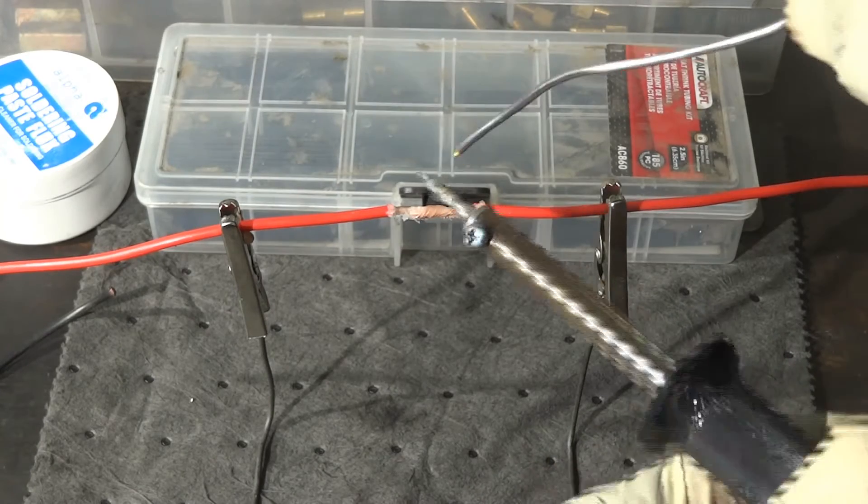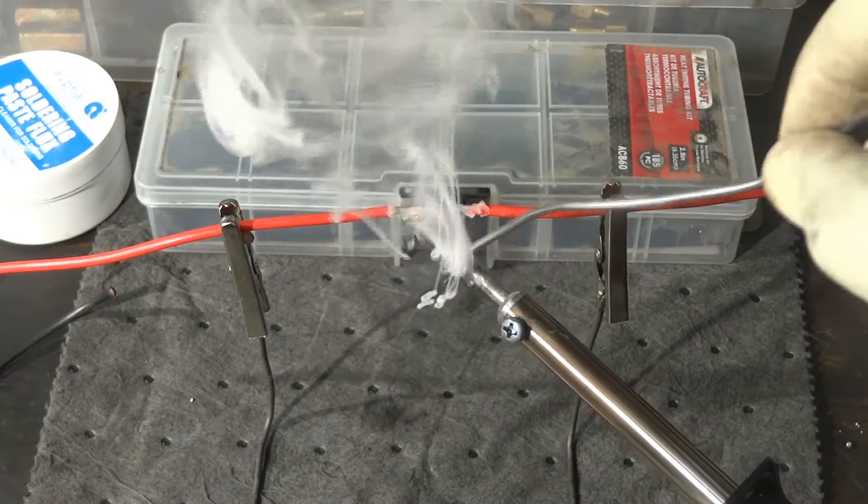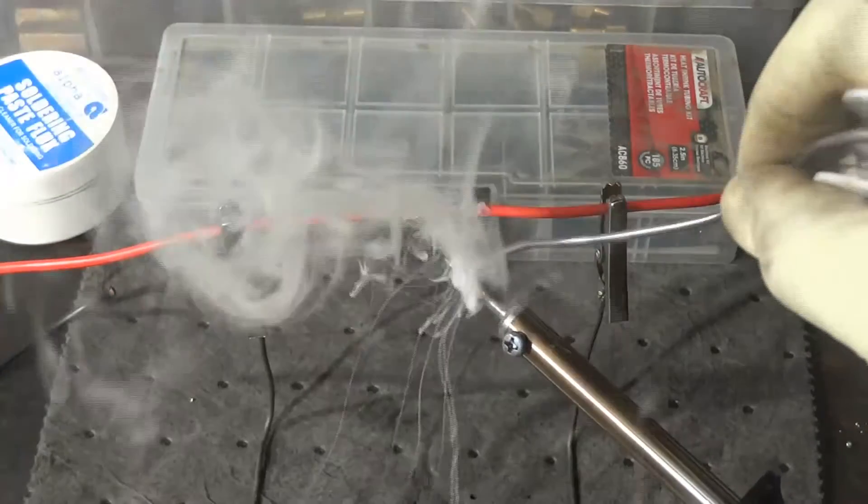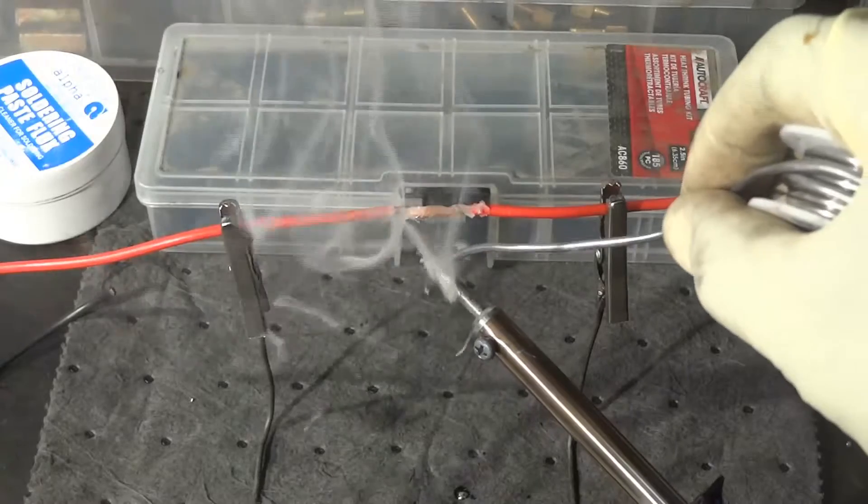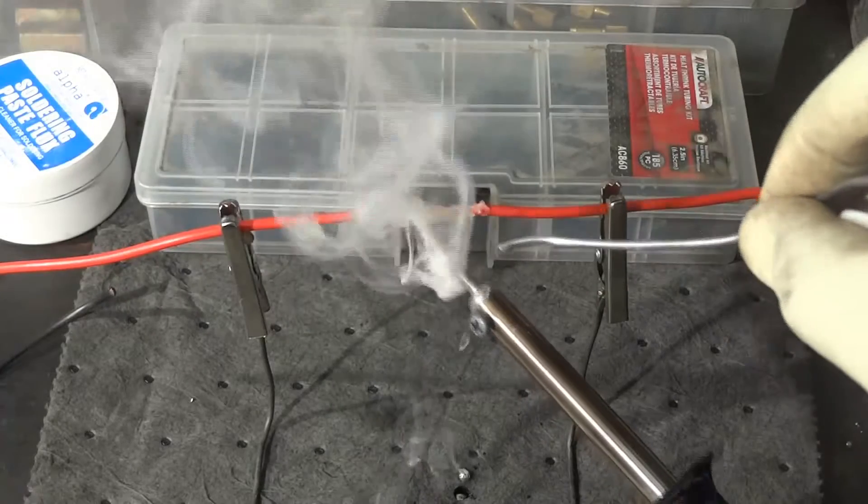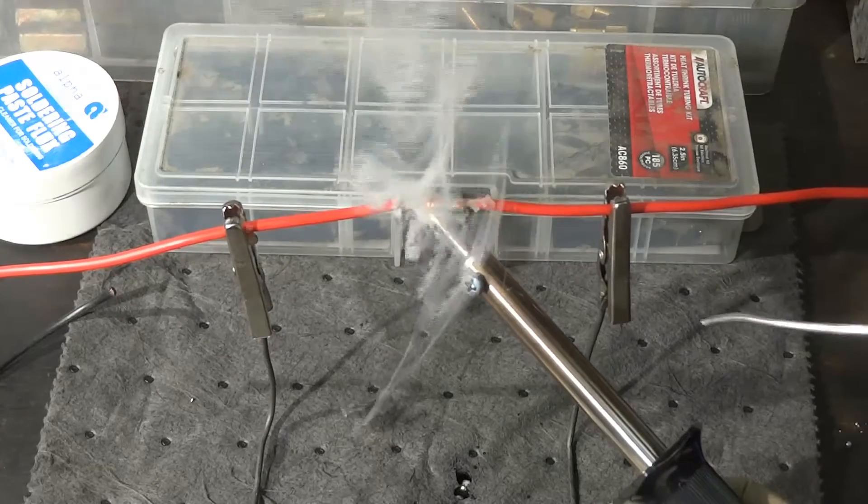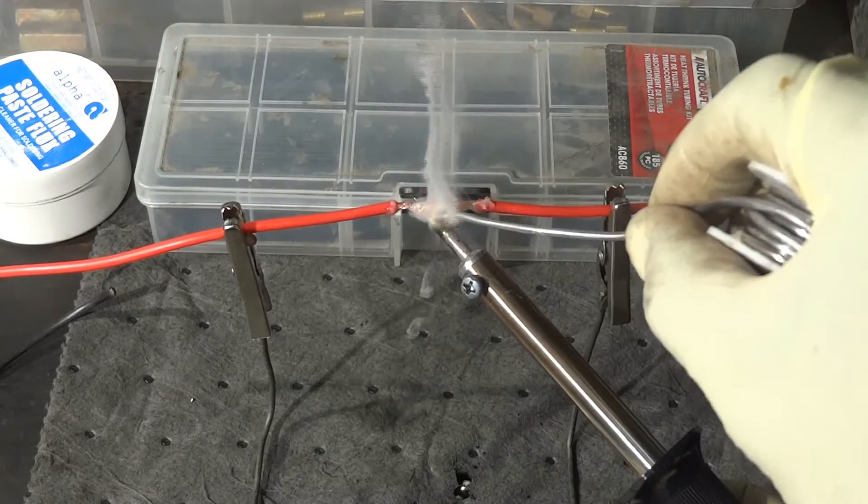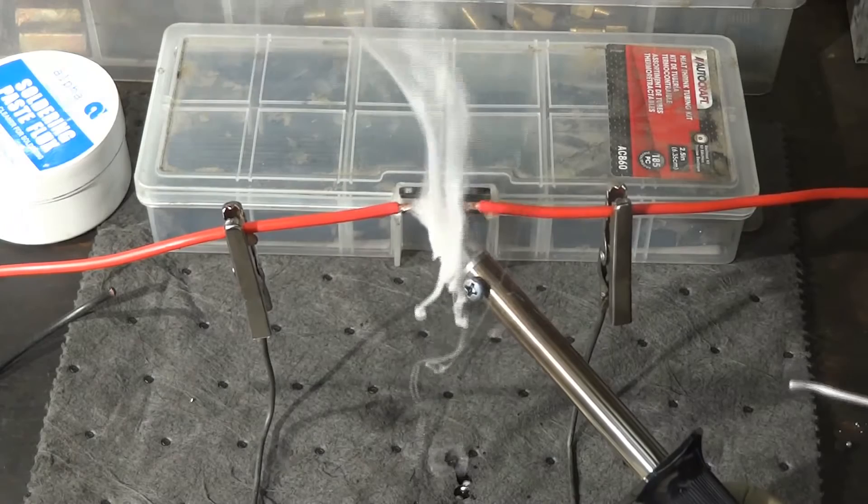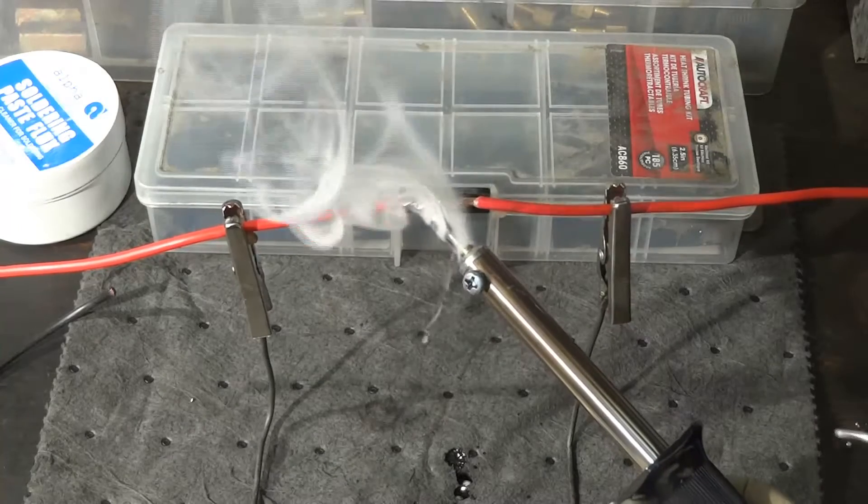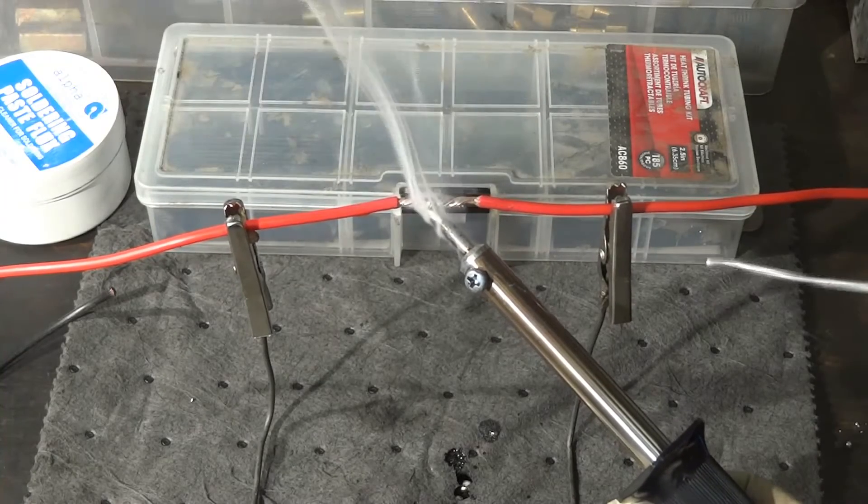So what you want to do is you want to coat the tip of your soldering iron with some solder, and then put your soldering iron below the wire. So you have to put it like this. And that little solder you're putting on the tip of the wire is helping transfer the heat to the wire. So it's helping heat the wire faster.